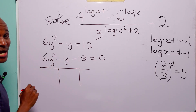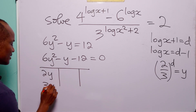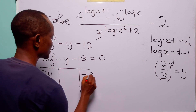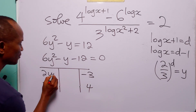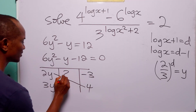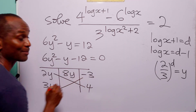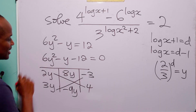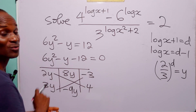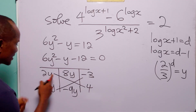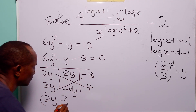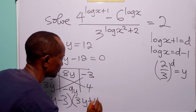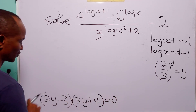We factorize using the table method. The factors of 6y squared are 2y and 3y, and the factors of minus 12 are minus 3 and 4. Multiplying 2y by 4 gives 8y, and multiplying 3y by minus 3 gives minus 9y. Since 8y minus 9y equals minus y, the quadratic factorizes correctly.